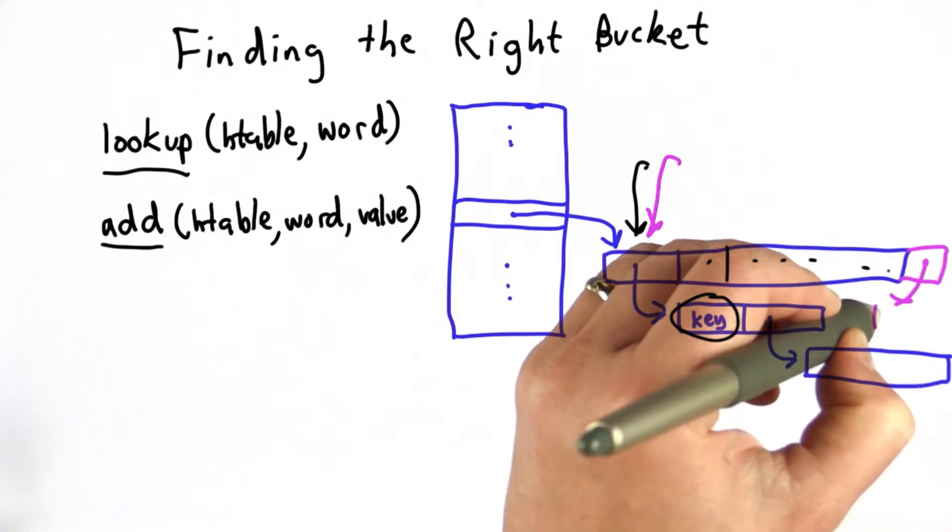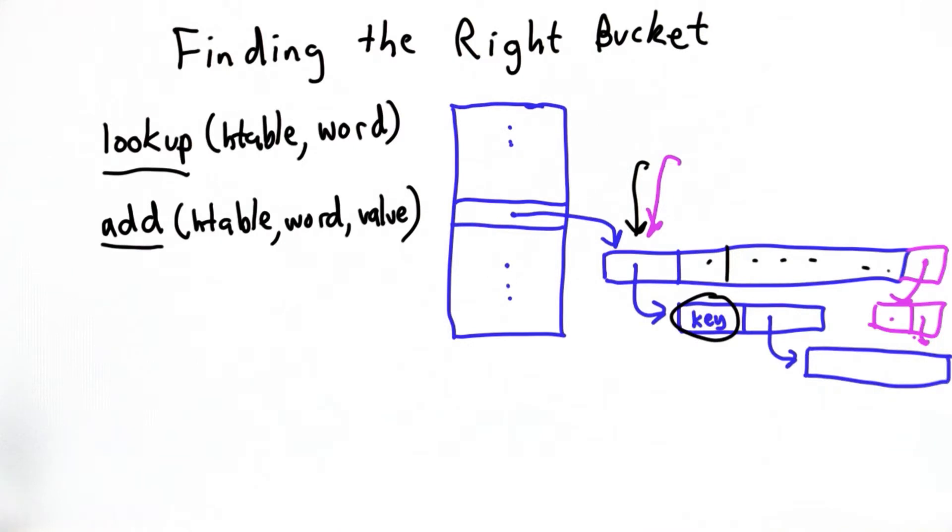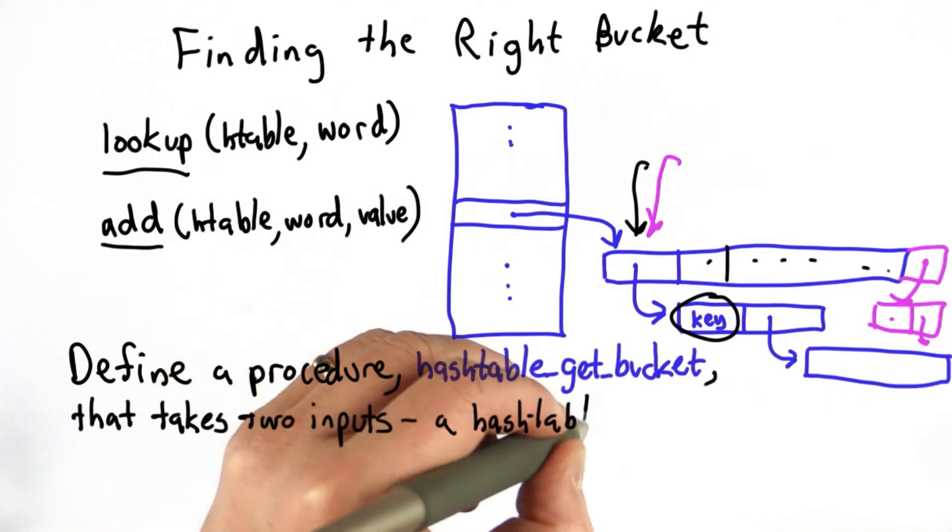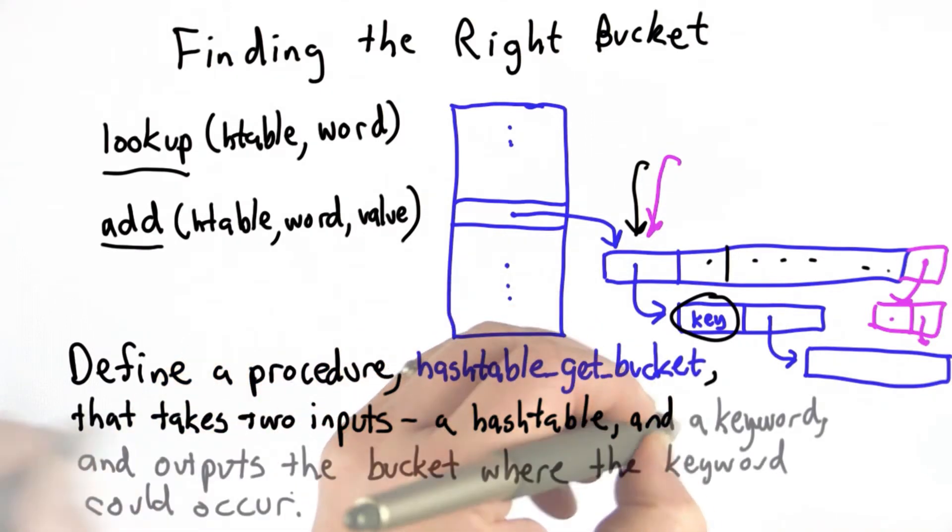Both of those depend on first being able to find the right bucket. So we'll do that once and be able to reuse that code in both lookup and add. Our goal is to define a procedure called hashtable_get_bucket that takes two inputs: a hash table and a keyword.